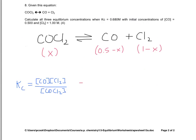So when we substitute in our values here in red, Kc is given as 0.680, and that equals 0.5 minus X times 1 minus X all over X.